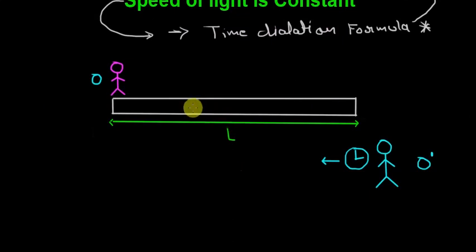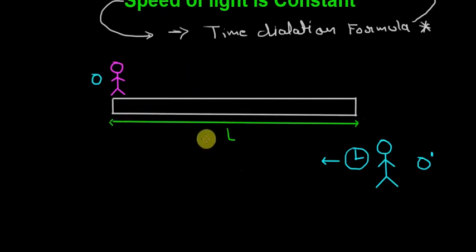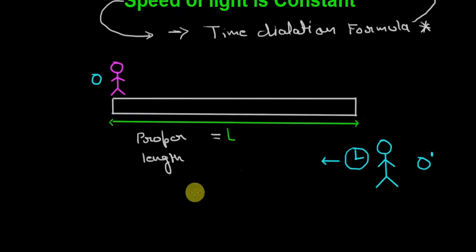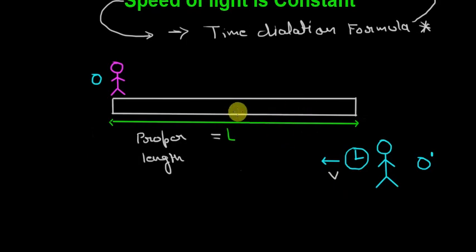So understand this diagram very carefully. Here is an observer O which is at rest with respect to this road. Whatever length this observer measures is called the proper length, denoted by L. Now here is another observer who is moving with some speed V in this direction. Whatever length he measures of this road is known as the improper length, because the road is moving with respect to this observer. Let us call it L dash.